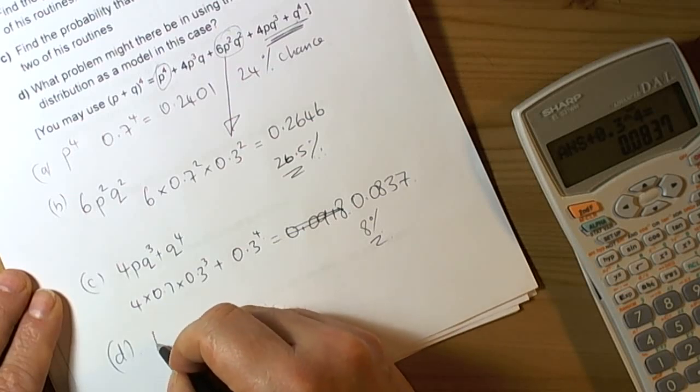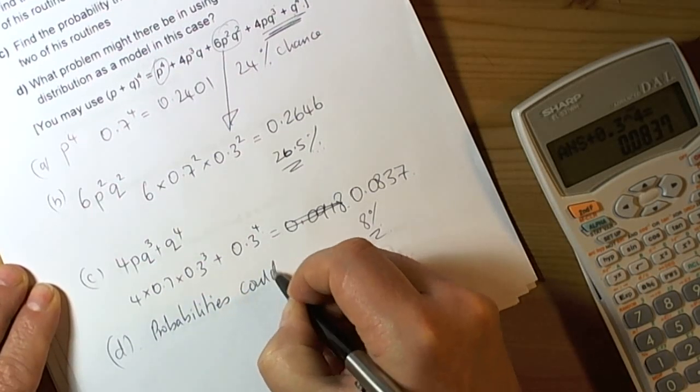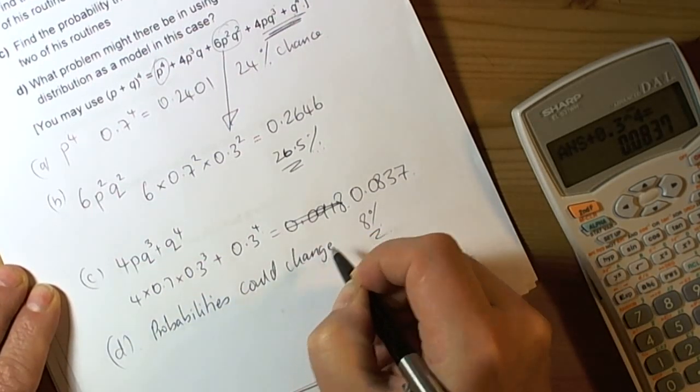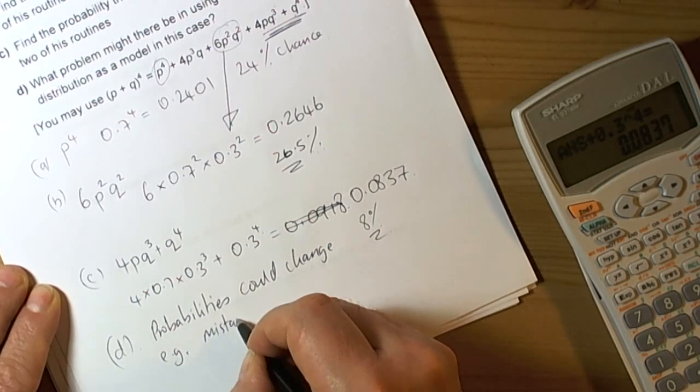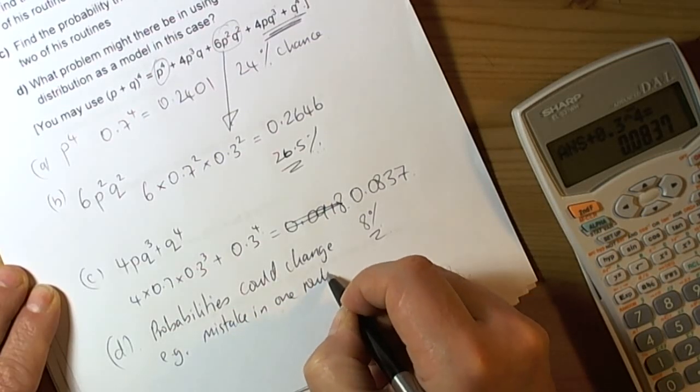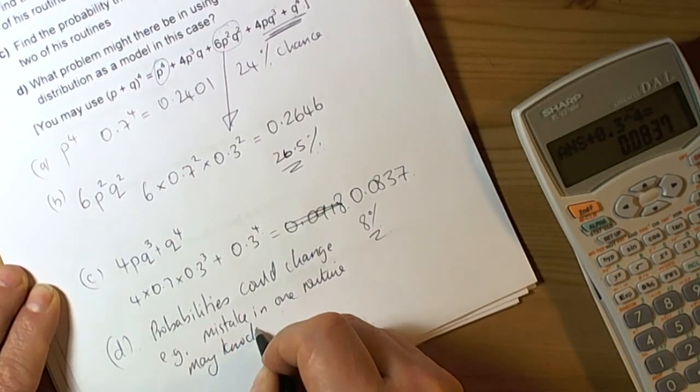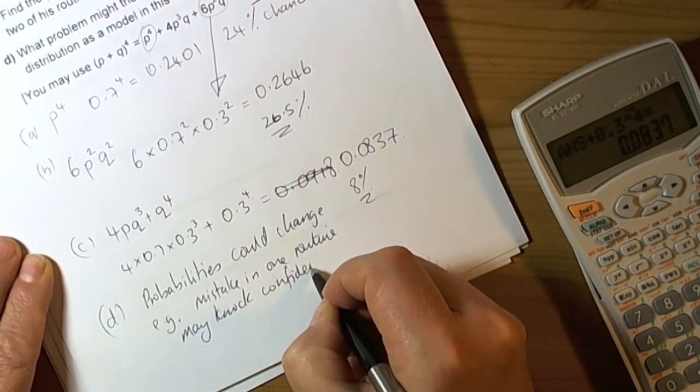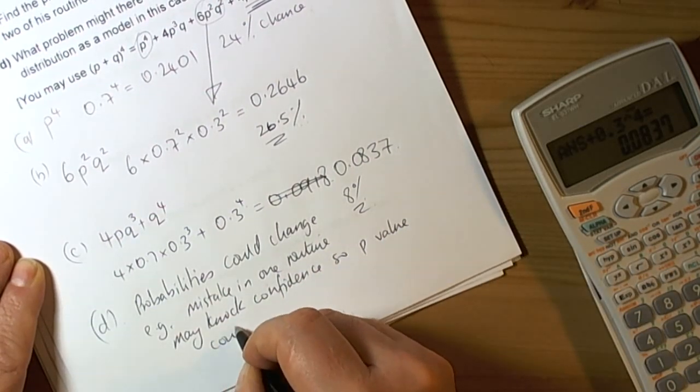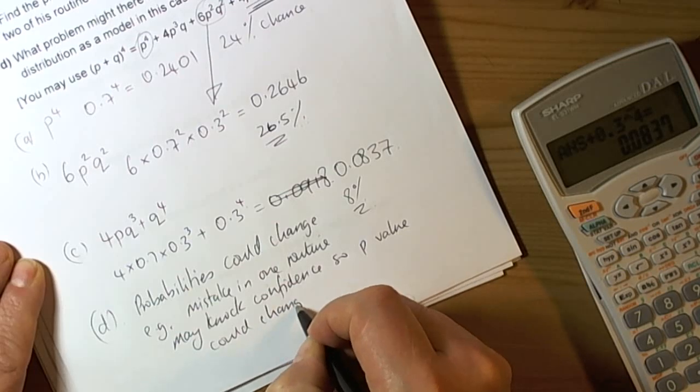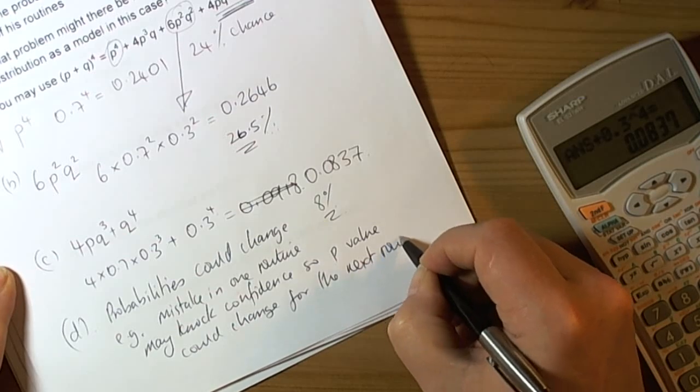So for Part D, what problem might there be? We'd say that probabilities could change. For example, a mistake in one routine may knock confidence, so the p-value could change for the next routine.